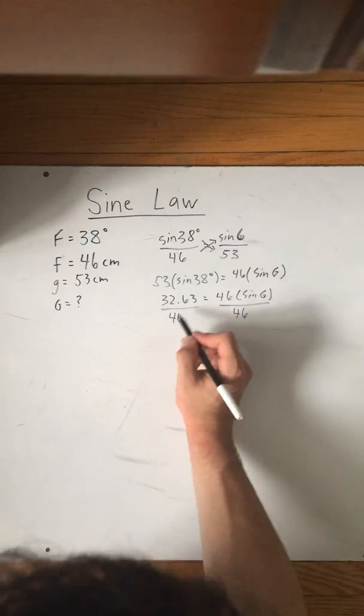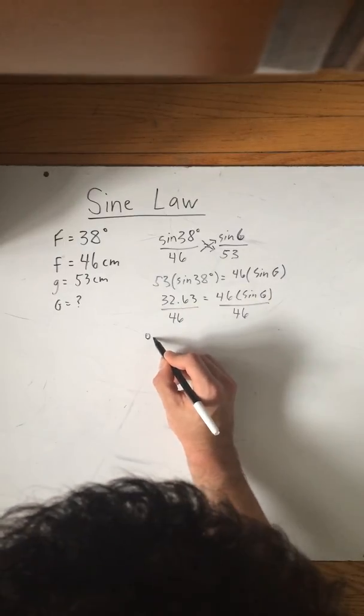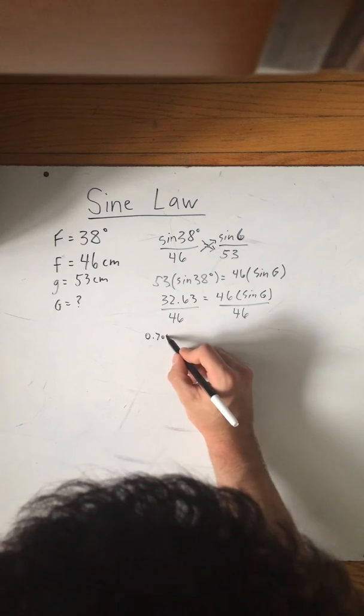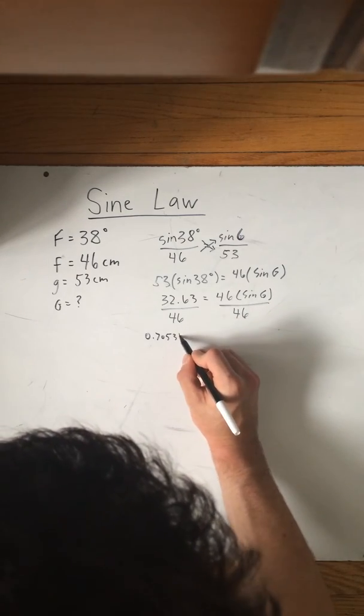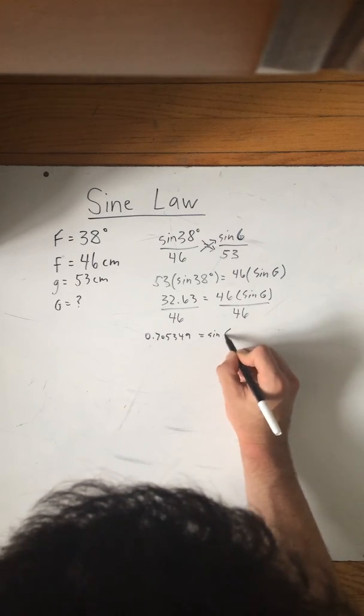And when you divide 32.63 by 46, you will get 0.705349 is equal to sine G.